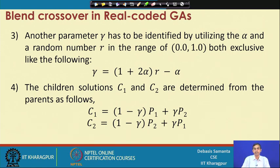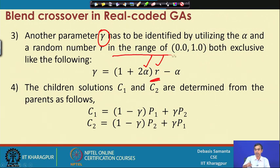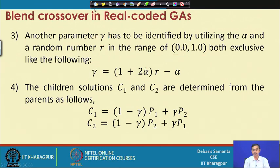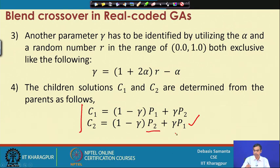This technique calculates another parameter denoted as gamma, expressed in terms of a random number r. Alpha is already known; a random number r is generated in the range 0.0 to 1.0. Based on r and alpha, we decide the value of gamma — since r is random and alpha is constant, gamma is also a random number. Having this gamma, any two children C1 and C2 can be calculated: C1 = (1 − γ)*P1 + γ*P2, and C2 = (1 − γ)*P2 + γ*P1.